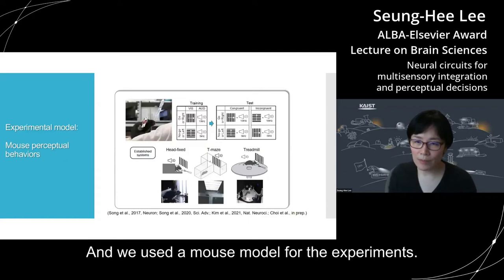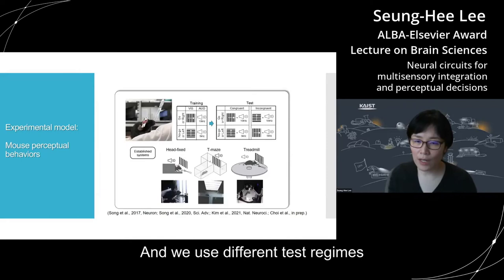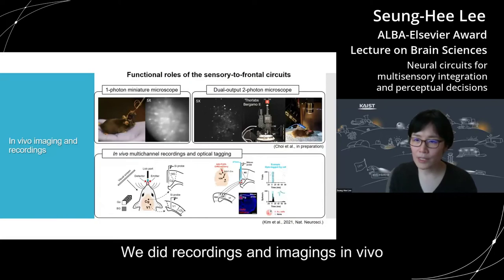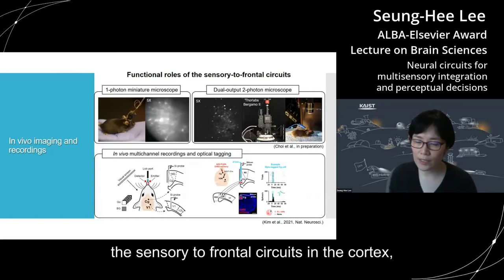We use the mouse model for the experiments, as mice can perceive visual and auditory inputs like humans do, and we use different test regimes for understanding how the mouse makes perceptual behaviors. We do in vivo imaging and recording, and my talk will cover some of the data from recordings and imaging in vivo to understand the functional roles of the sensory-to-frontal circuits in the cortex in multi-sensory integration and perceptual decision making.